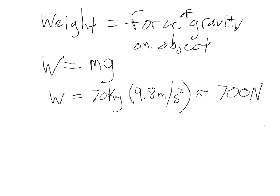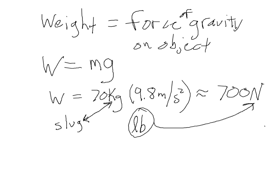Usually Europeans, if you ask them how much they weigh, will give their mass in kilograms rather than their weight in Newtons — maybe because they don't want to say they weigh 700. The English unit of weight is the pound, which you're familiar with. What you're probably not familiar with is the English unit of mass — it's the slug. So pounds go with Newtons, and slugs go with kilograms.